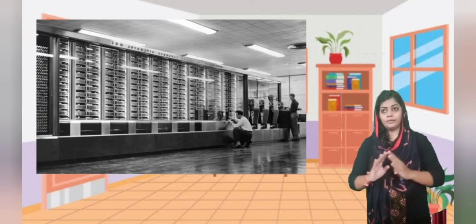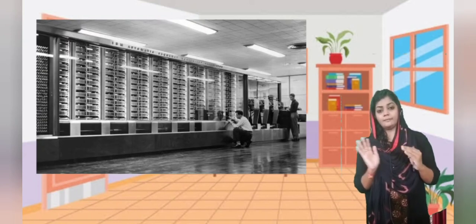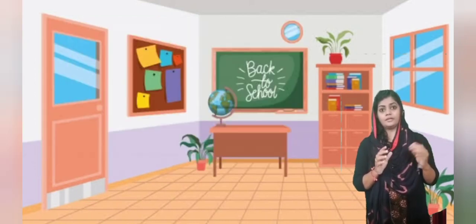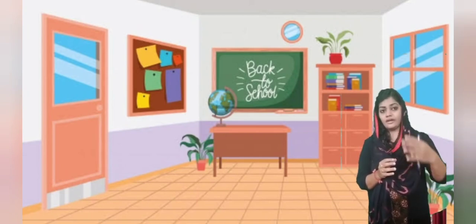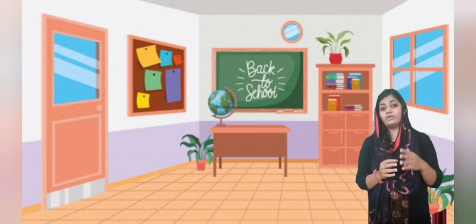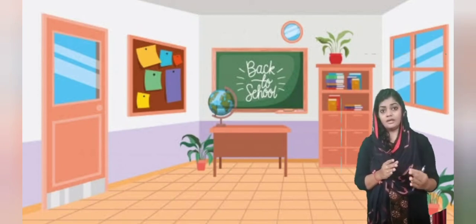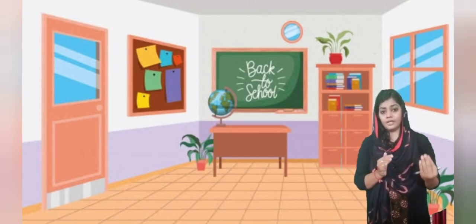The ENIAC occupied a big room — it was a full set, that first generation computer. It was bulk in size, required a large room for installation, and emitted a large amount of heat. Consequently, air conditioning was necessary for the proper working of the computer.